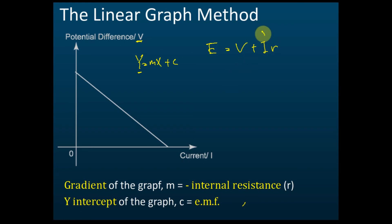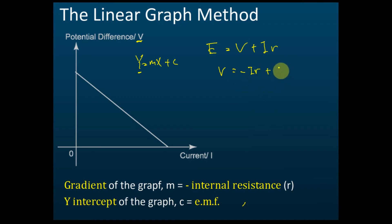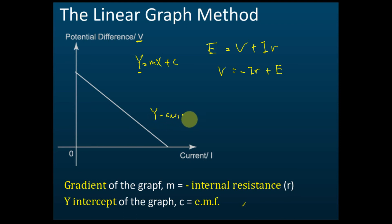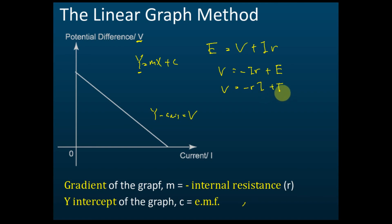We move IR to the other side, so the equation becomes V = -IR + E, which we can rewrite as V = -RI + E. This way, the current I is the horizontal axis x, and -R is associated with the gradient.